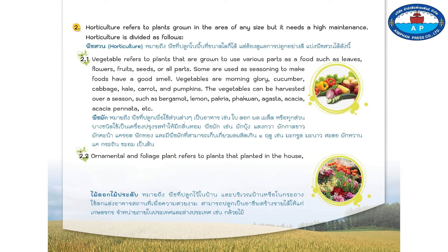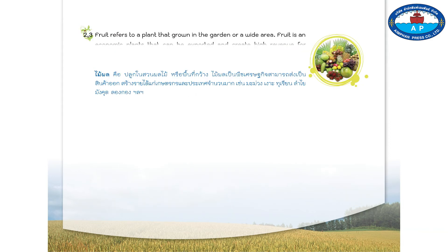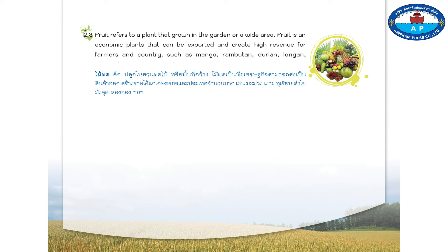Number two point two, ornamental and foliage plants refers to plants planted in the house, around the house, or in pots. They are used to decorate buildings to make them beautiful. They can also be grown professionally and create income for farmers to sell in the country and overseas, such as orchids. Two point three, fruit refers to plants grown in a garden or wide area. Fruit is an economic plant that can be exported and create high revenue for farmers and the country, such as mango, rambutan, durian, longan, mangosteen, and longkong.